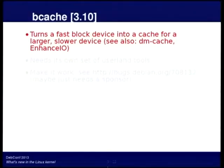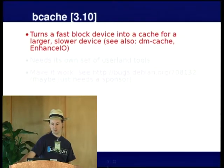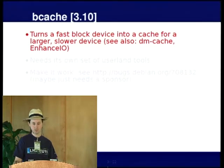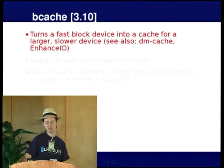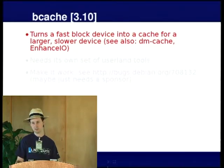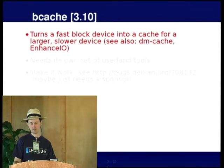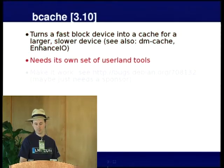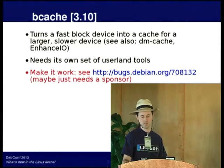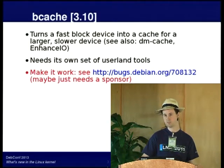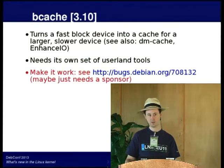Bcache has just recently been added in Linux 3.10. It's similar in some ways to transcendent memory but also very different — it allows you to use a fast disk, like a solid state disk, as a cache in front of a larger but slower disk. This idea has been done several times: there's also DM cache in mainline Linux, and EnhanceIO, which is not, but all three are available in Debian now. Bcache needs new userland tools, and someone has been working on packaging those. It might just need a sponsor, so if it sounds interesting, look at the bug and see if you can sponsor that package.